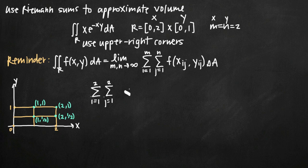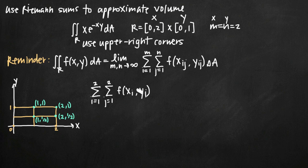When you use upper right-hand corners, you can simplify the notation and write f(x_i, y_j). If you use upper left-hand corners, lower left-hand corners, lower right-hand corners, or midpoints, you must use the full x_ij, y_ij notation — it's really just a technicality. Regardless of notation, we're plugging in the coordinate points we found. We then multiply by delta A, which is the change in area for each rectangle — that is, delta x times delta y.